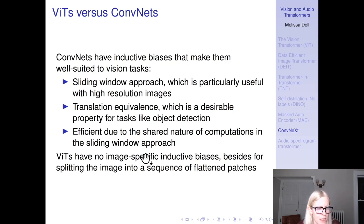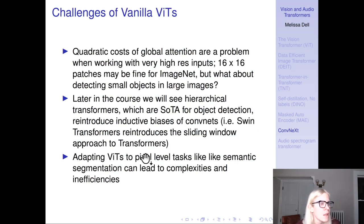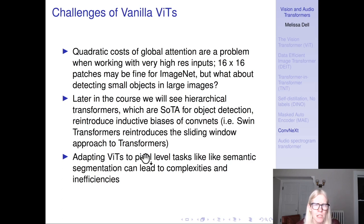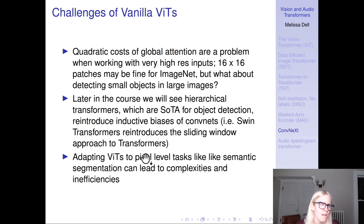ViTs have no image-specific inductive biases besides splitting the image into flattened patches. Challenges of vanilla ViTs include the quadratic cost of global attention. It works fine with 16x16 or 8x8 patches on standard ImageNet, but if you have a high-resolution document image and need to identify many small objects — like cells in a table — you need really high resolution input and will run into computational problems. Later in the course we'll see hierarchical transformers like Swin Transformer, which are state-of-the-art for object detection and essentially reintroduce CNN inductive biases.